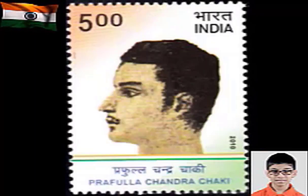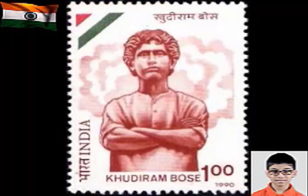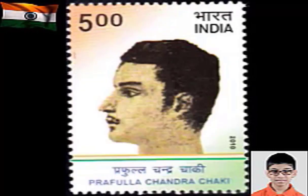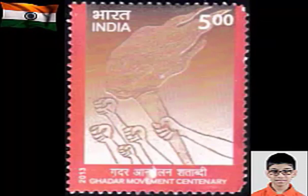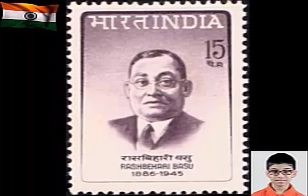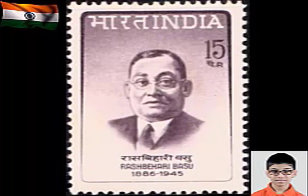Khudiram Bose and Prafulla Chaki attempted the murder of district judge Kingsford of Muzaffarpur. This precipitated the Alipore bomb case, and a number of revolutionaries including Khudiram Bose and Prafulla Chaki attained martyrdom. The Delhi-Lahore conspiracy, hatched in 1912, planned to assassinate the then Viceroy of India, Lord Hardinge, on the occasion of transferring the capital from Calcutta to New Delhi. Rash Behari Bose planned a bomb attack on 23rd December 1912, when a hand-made bomb was thrown at the Viceroy's procession through Chandni Chowk. The Viceroy escaped with injuries. Rash Behari successfully avoided capture for nearly three years before fleeing to Japan in 1916.